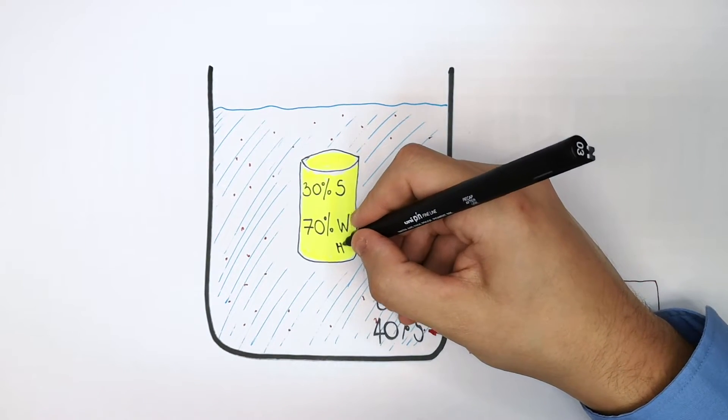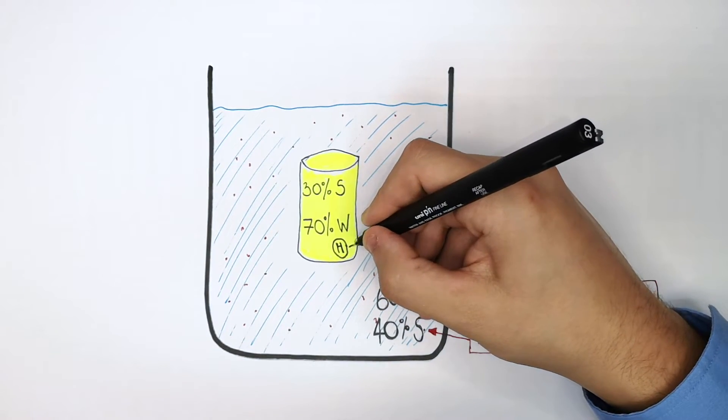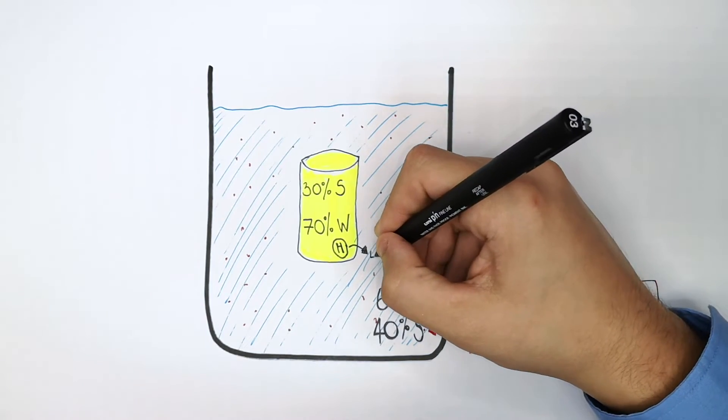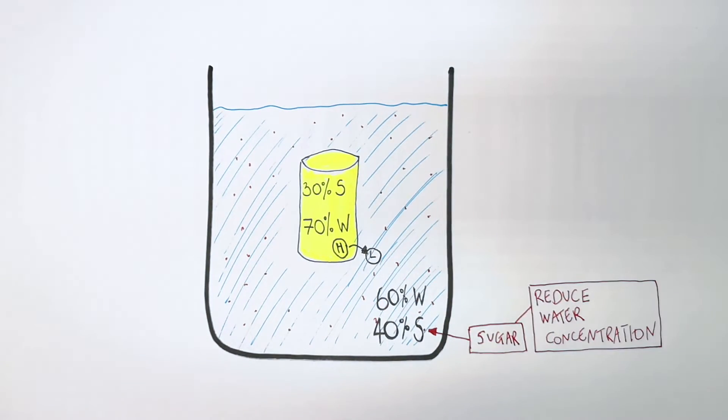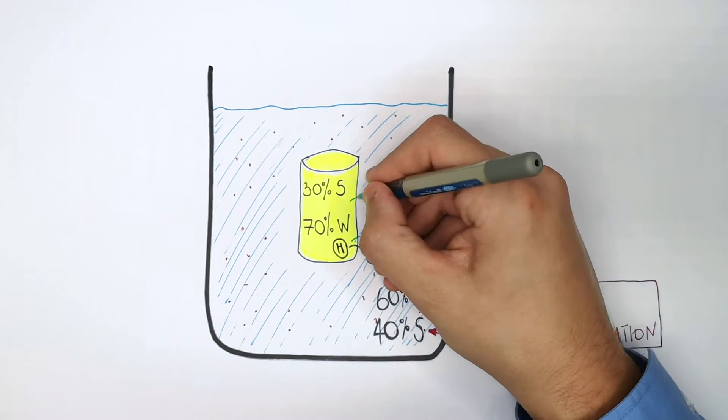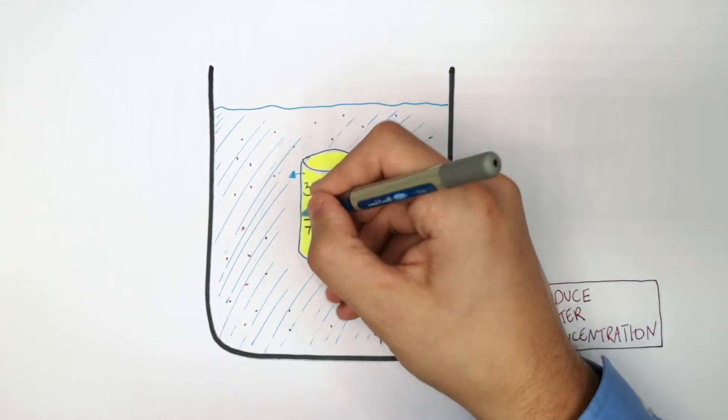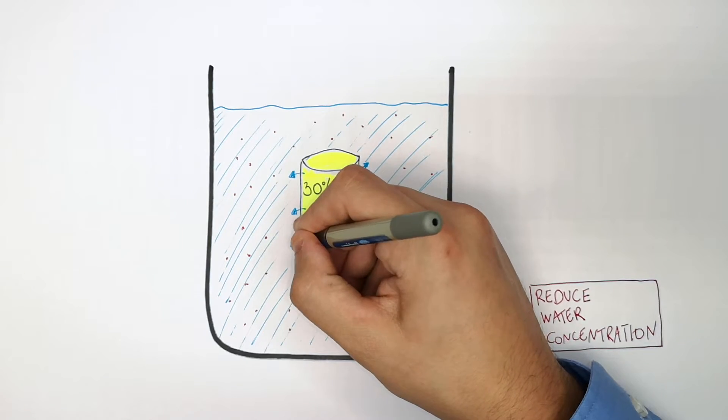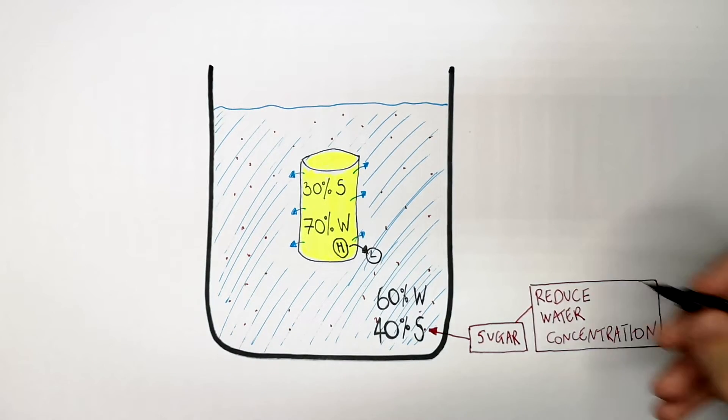Step number two is you write high. And then you're going to show the water moving from a high to low concentration by the process of osmosis. And now the water is going to leave the potato by osmosis through a partially permeable membrane from a high to low concentration.